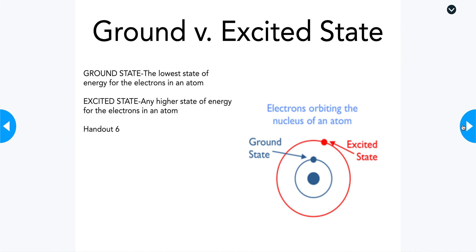We have two types of states for electrons. Ground state is the lowest energy state for the electrons in an atom. The Bohr models we've been drawing have all been ground state atoms with electrons in the lowest possible energy level. Any higher state of energy is called an excited state. If a valence electron jumps from its outermost energy level up to an empty energy level, that is an excited state, and it requires a lot of energy. In your packet — handout six — it shows what you would describe as ground state and excited state and that jump that takes place.